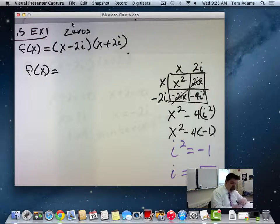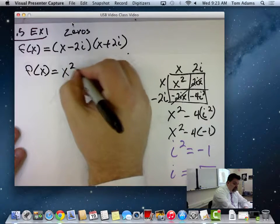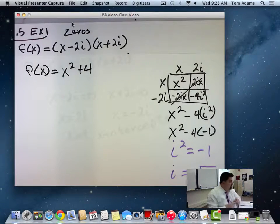So then what I have up here is a minus times a minus is a plus. So I have x squared plus 4.